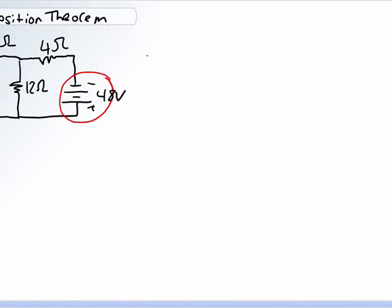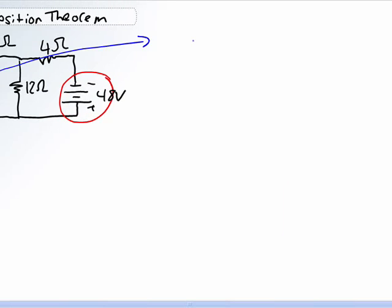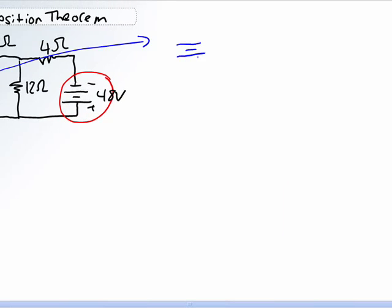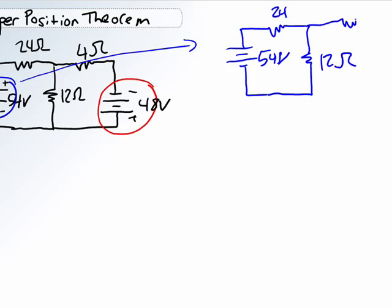So we need to start redrawing this network. How you do it is grab yourself a colored pen or colored pencil and redraw it for the 54-volt source. So here's our 54-volt source. He's still hooked up to the 24-ohm resistor, which is still hooked up to the 12-ohm resistor,